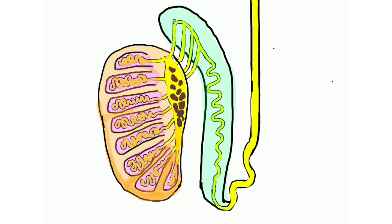Now the structural anatomy of the testes. The testes is enclosed by the fibrous capsule called the tunica albuginea. The tunica albuginea thickens and forms a ridge-like structure called the mediastinum testis. From the mediastinum testis, septa extend towards the inner aspect of the testes, dividing it into lobules — forming 20 to 30 lobules in total.